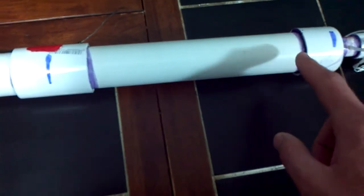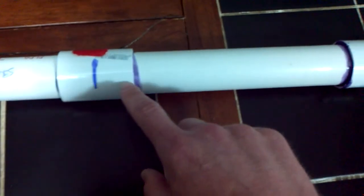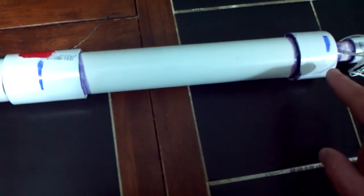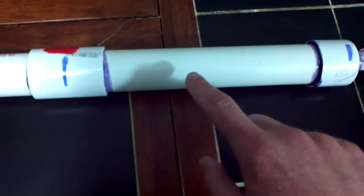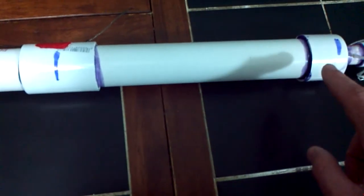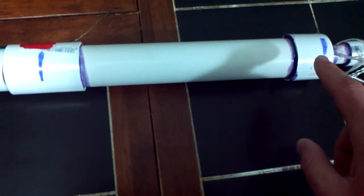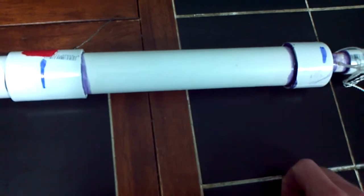This top part of the motor, the sustainer, is 10 inches long and the core is three-eighths, so it's a 10 inch single grain inhibited on the outside.